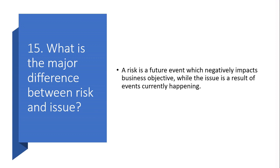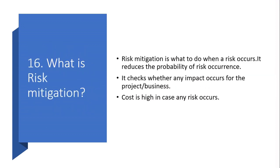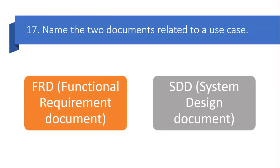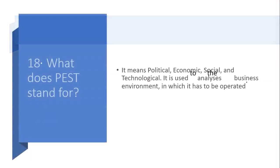Question 16: What is risk mitigation? Risk mitigation is what to do when a risk occurs. It reduces the probability of risk, checks whether any impact occurs for the project business, and cost is high in case any risk occurs. Question 17: Name the two documents related to a use case. Question 18: What does PEST stand for? It means Political, Economic, Social, and Technological. It is used to analyze the business environment in which the organization operates.